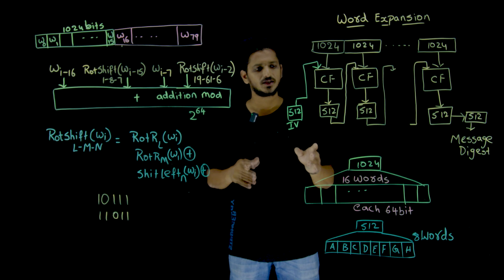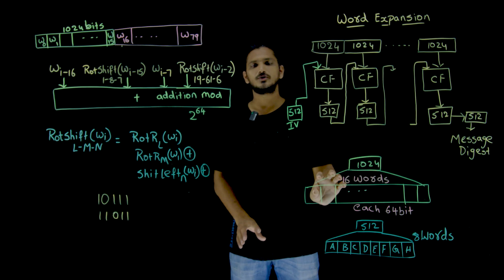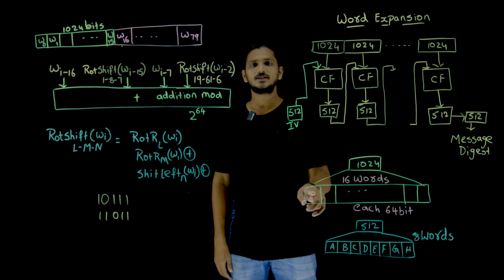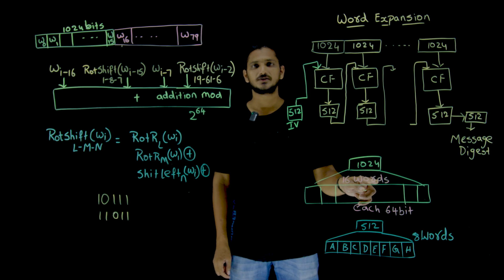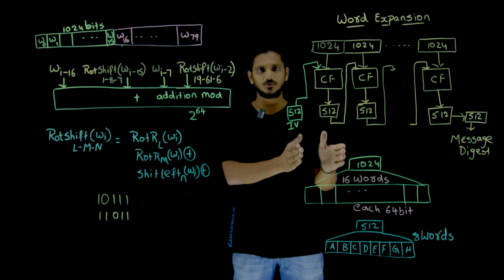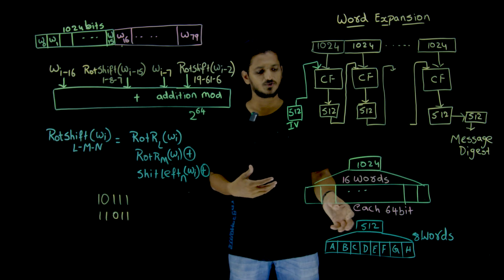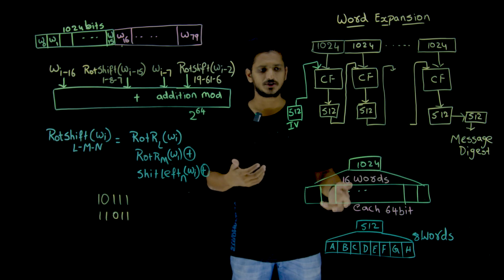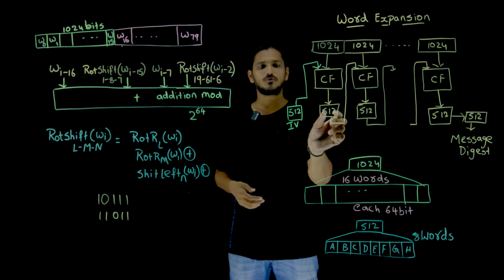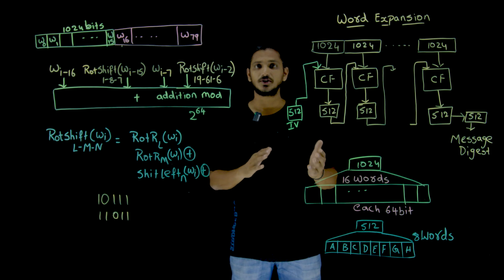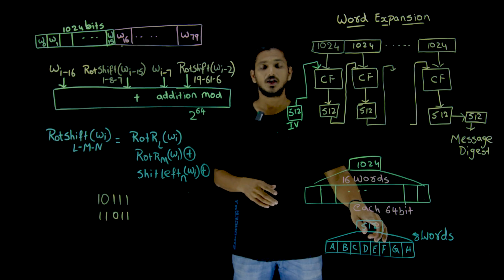The 1024 bits is divided into 16 words, and each word is of size 64 bits — 16 × 64 = 1024 bits. This input is divided into 16 words. Similarly, the 512-bit output is divided into 8 words — 8 × 64 = 512 bits.